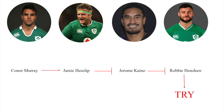In simpler terms, when representing genes, Murray passes the ball to Heaslip, the ball being the gene product, and Heaslip inhibits Kaino from inhibiting Henshaw, and thus Henshaw is able to score.